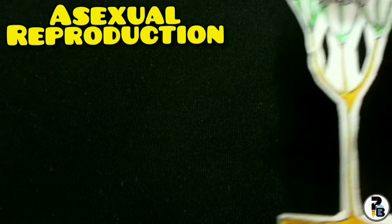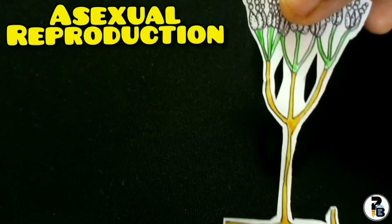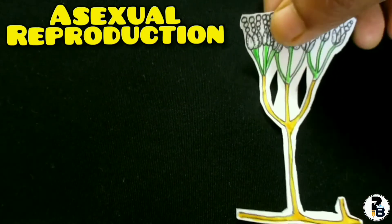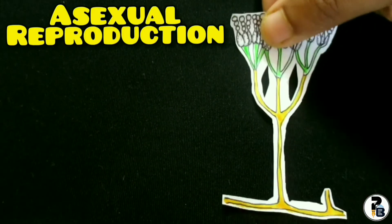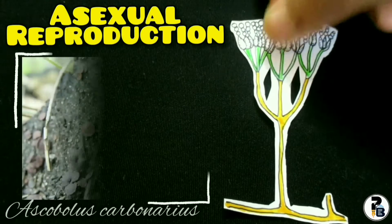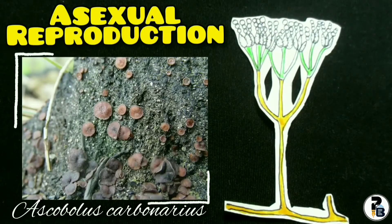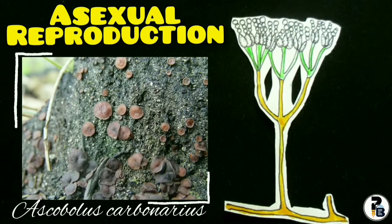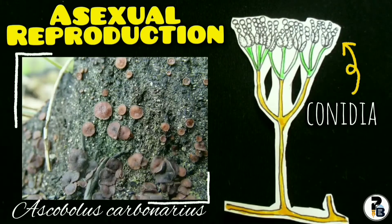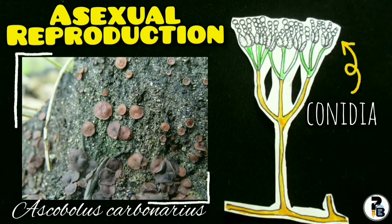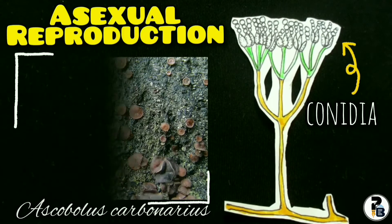Reproduction takes place both asexually and sexually. In Ascobolus carbonarius, asexual reproduction takes place by the formation of conidia on the mycelium. In Ascobolus catigenus,